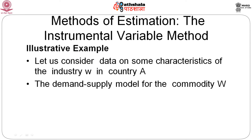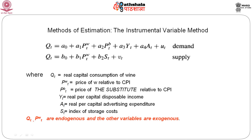Consider industry data for commodity W: the demand equation includes price of W, price of substitute commodity B, income Y, and advertising expenditure A; the supply equation includes price of W and storage cost S. In the demand equation only S is an instrumental variable, while for the supply equation there are three instruments: pB, Y, and A. For example, when estimating demand for tea, the substitute commodity may be coffee, so the price of coffee along with the price of tea must be included.